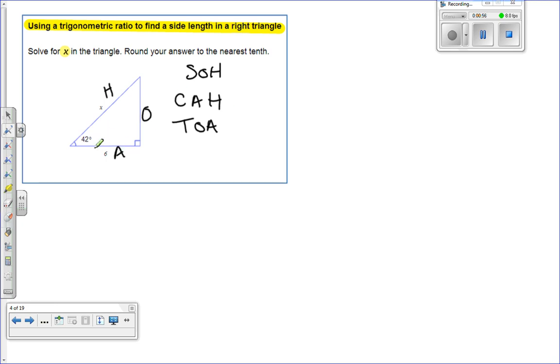So if you're looking at this, what do I have? I've got the angle, I've got this x and the 6. So I have the A and the H. The A and the H tells me that it's cosine - we're going to be using cosine because that's the only one that has A and H.